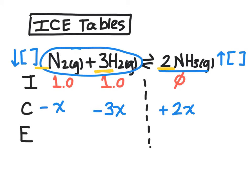We can write our equilibrium concentrations in terms of X. So nitrogen would be 1 minus X, hydrogen would be 1 minus 3X, and ammonia would be 2X. We could then plug those into our equilibrium expression.